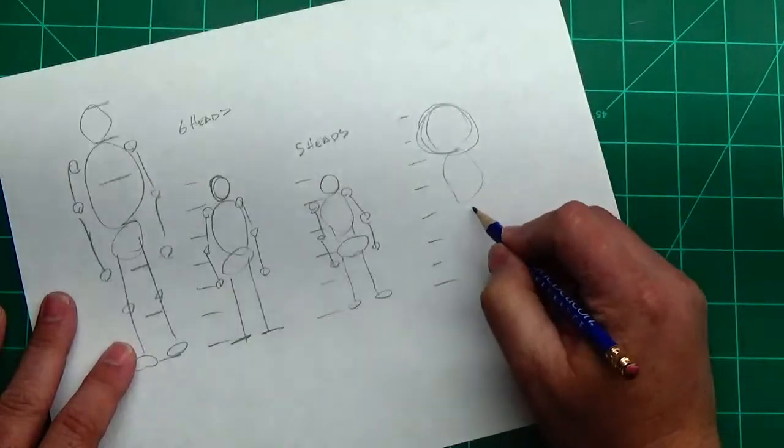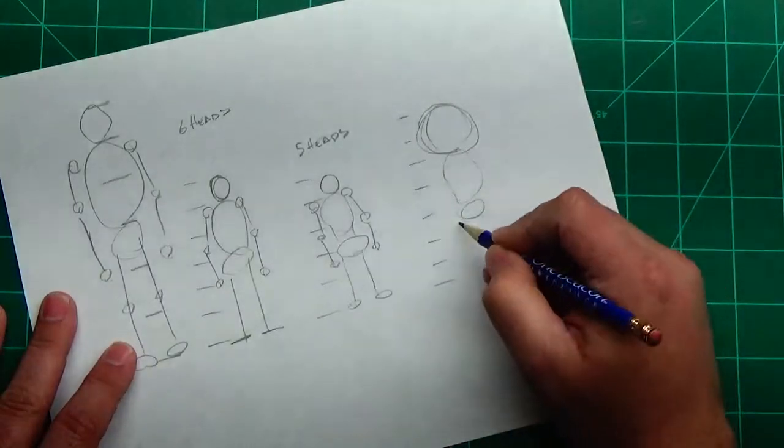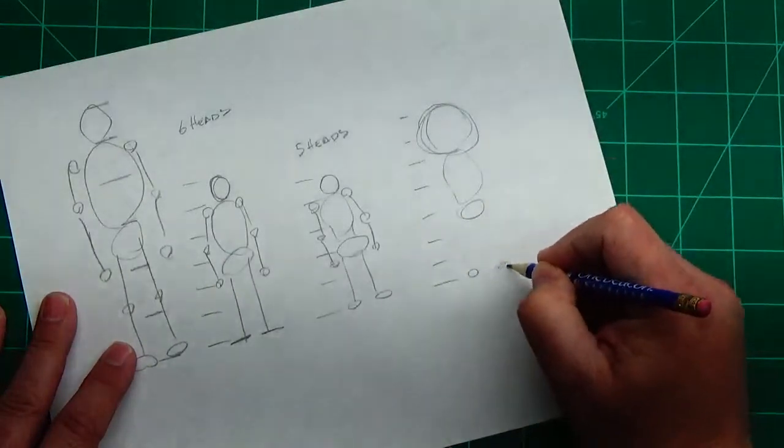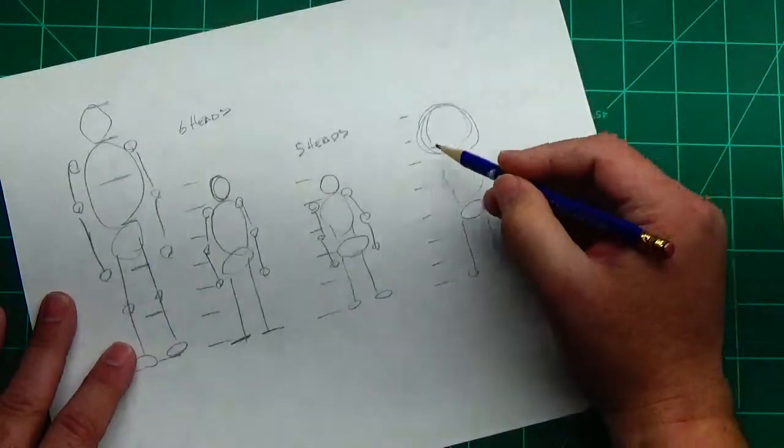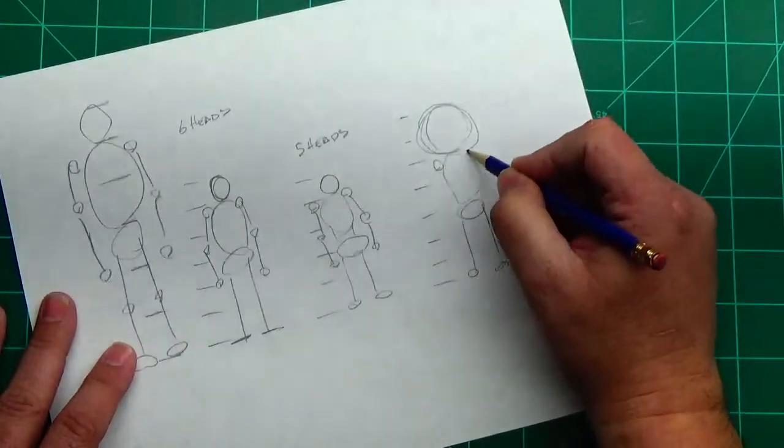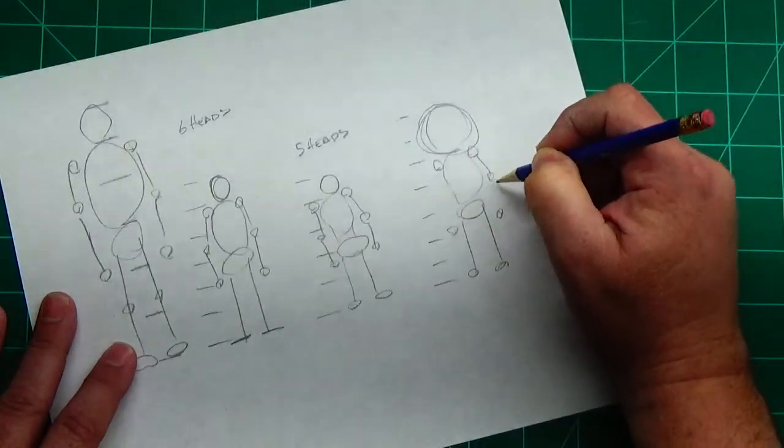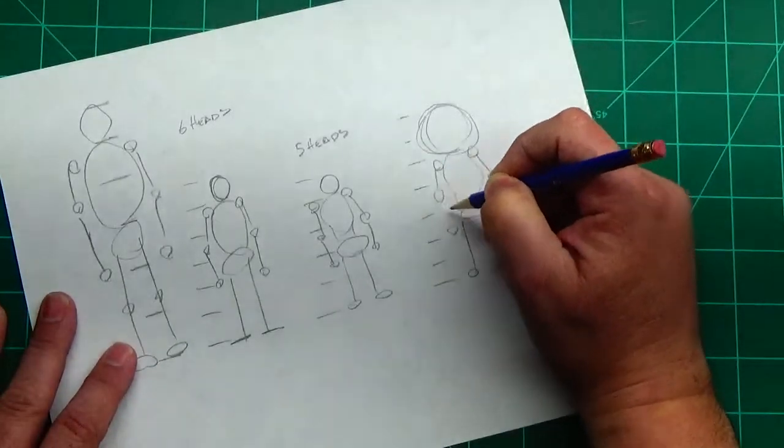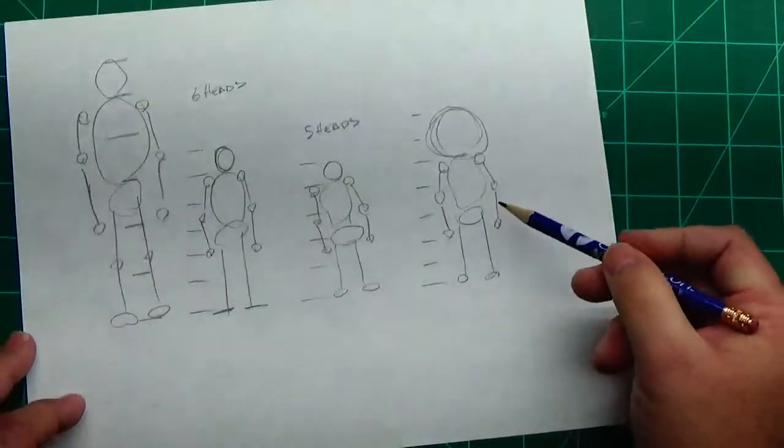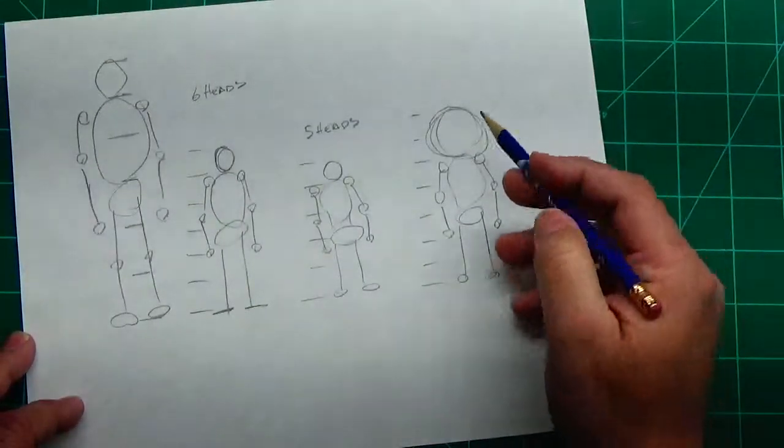So you've got your torso, your hips, feet, legs, and you can see how the bigger head makes it look like a kid. Hands will go right below the hips here. Put the elbow in the middle, elbow, middle. So there's your kid proportions. And the larger head is what makes the difference.